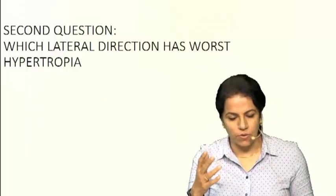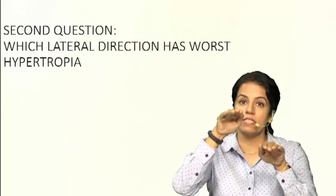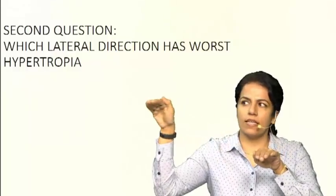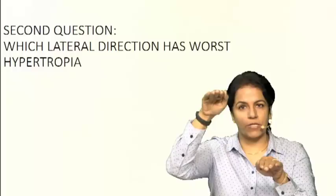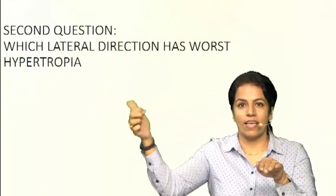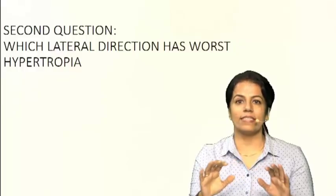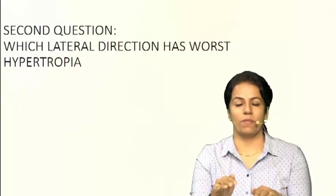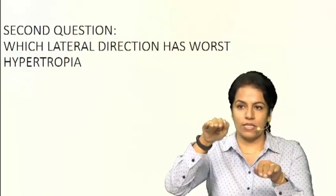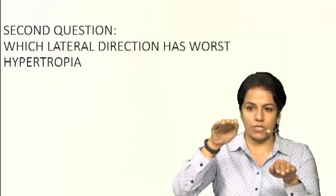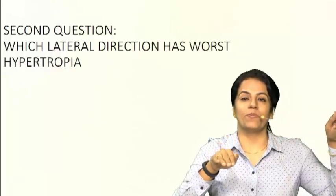To make it very clear: the two muscles in question when this right hypertropia increases in left gaze are right superior oblique and left superior rectus. For comparison, if it instead increases in right gaze — right eye abducted, so recti involved; left eye oblique involved — it would be right inferior rectus or left inferior oblique. Back to our example: right hypertropia increasing in opposite gaze means right superior oblique or left superior rectus are the two muscles in question.